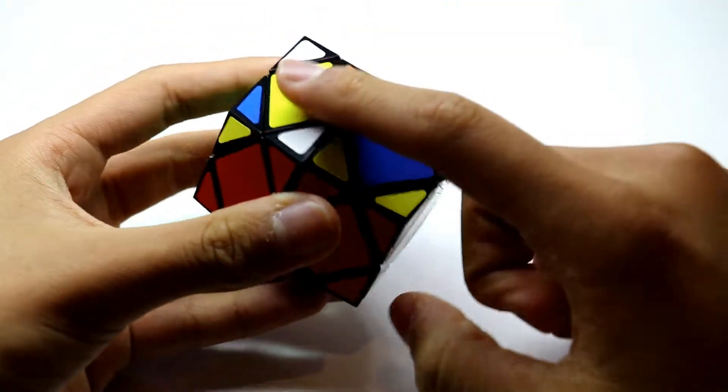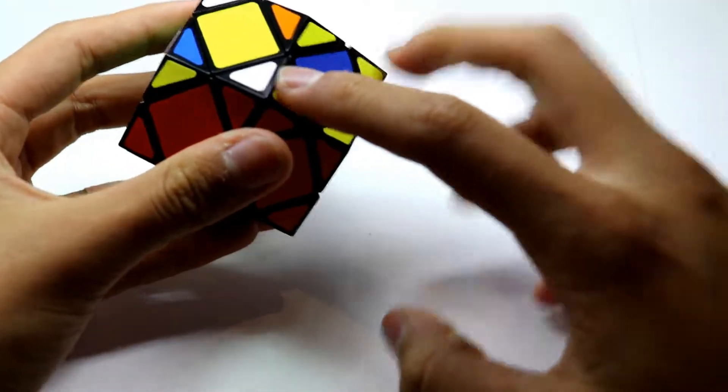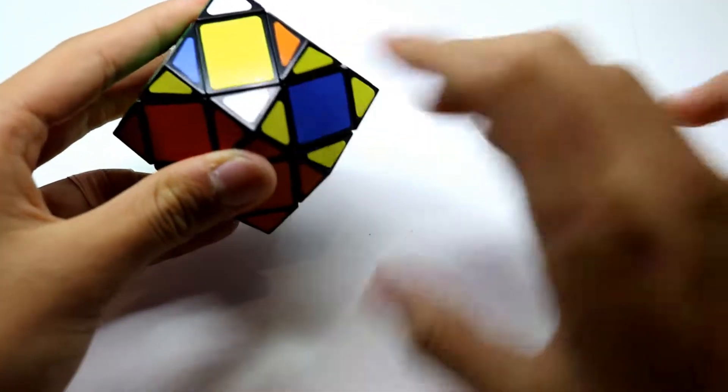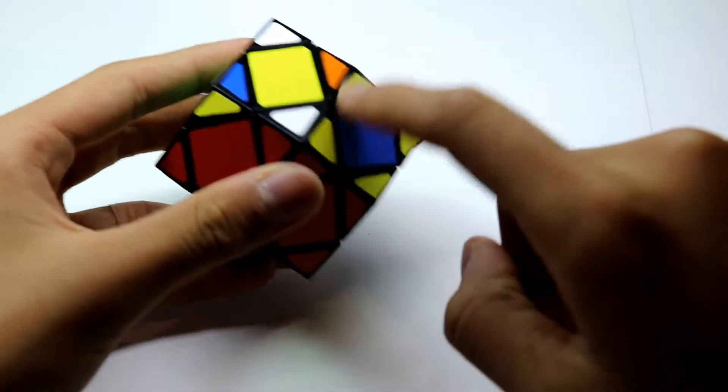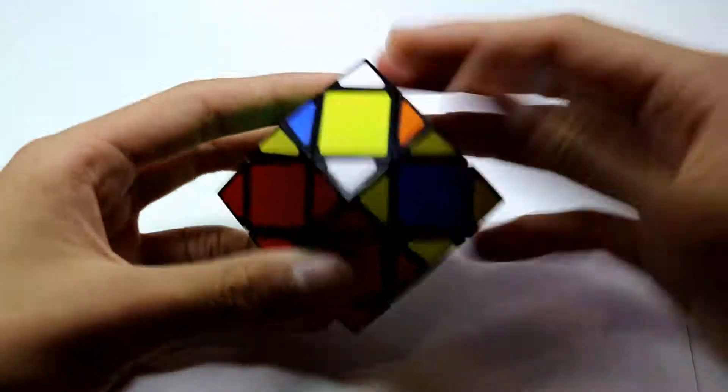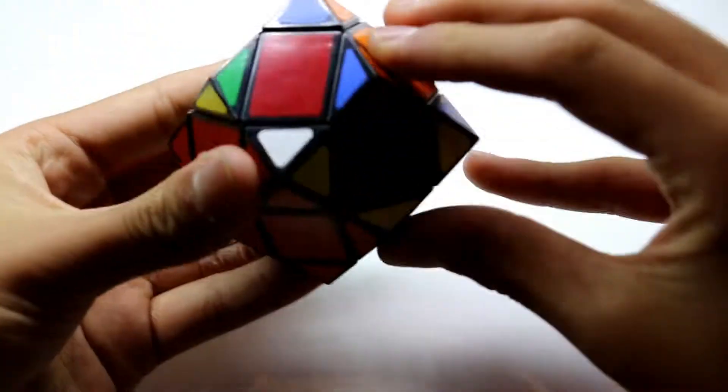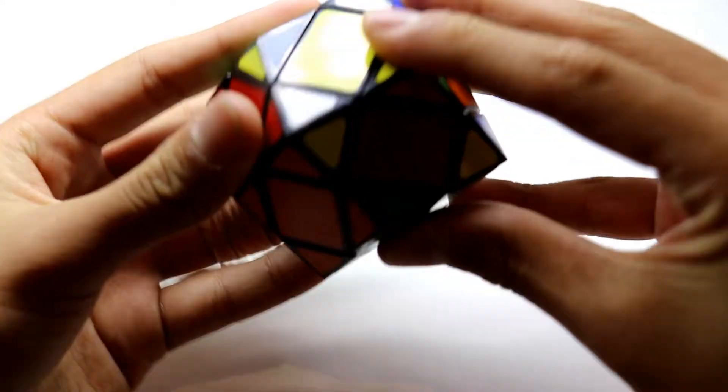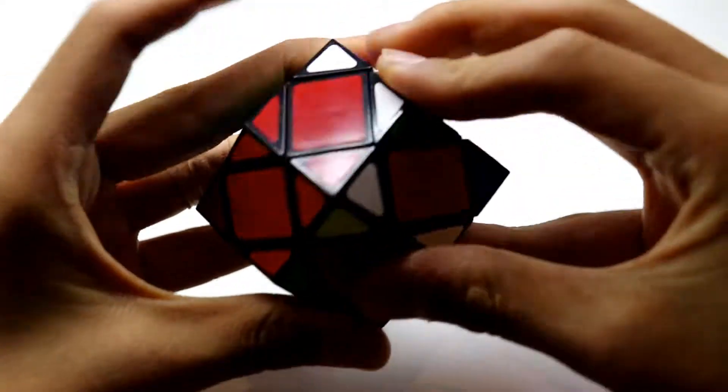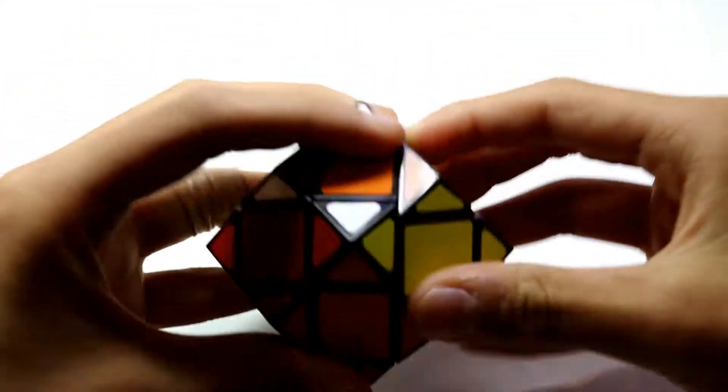So make sure that you're looking at it so that the two yellow pairs are on the right. And this one is on the left. And we do this algorithm. U, R, U prime, R prime, F, R prime, F prime, U, R.